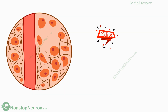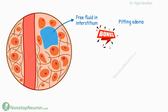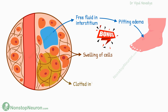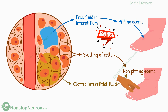For sticking with me until the end, here is a bonus point. Edema can be of two types: pitting and non-pitting. The type due to accumulation of free fluid in the interstitium is the pitting type. In this, when you press the area with a thumb, the fluid is displaced, leaving a pit in the skin for a while even when you remove the thumb. Slowly, the fluid comes back and the pit disappears. Swelling of the cells and clotted interstitial fluid produces non-pitting edema, in which no such pit is seen.